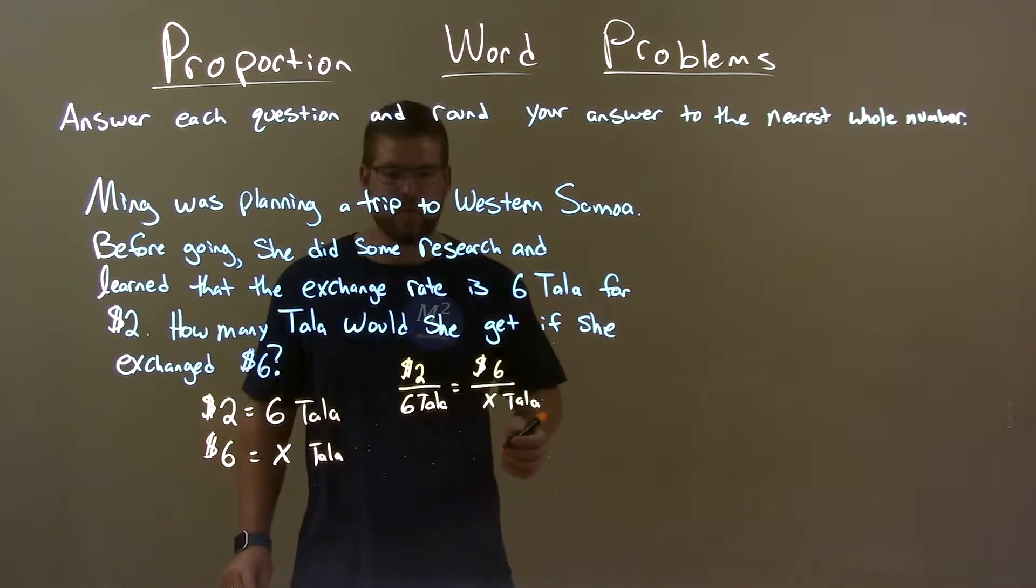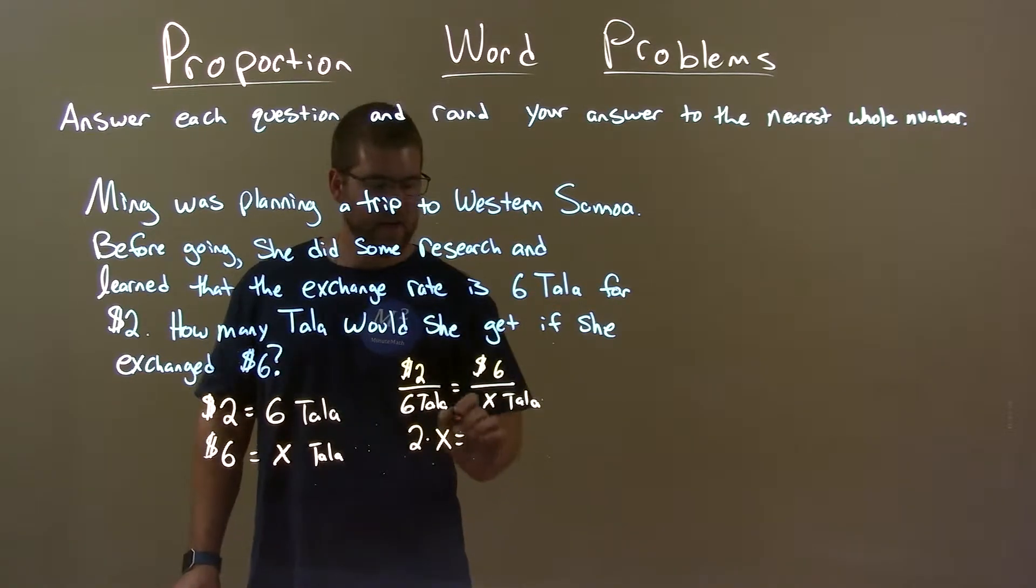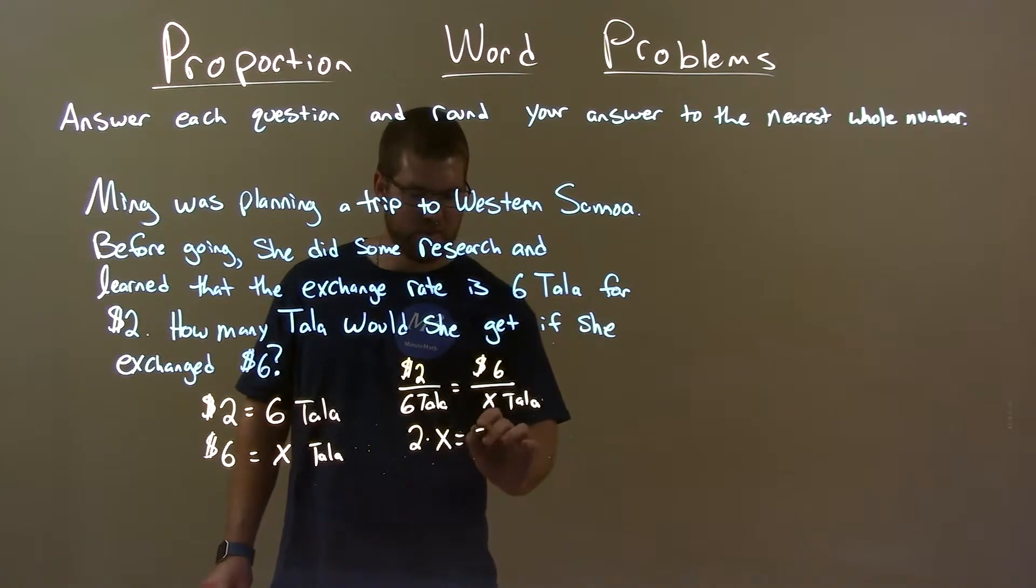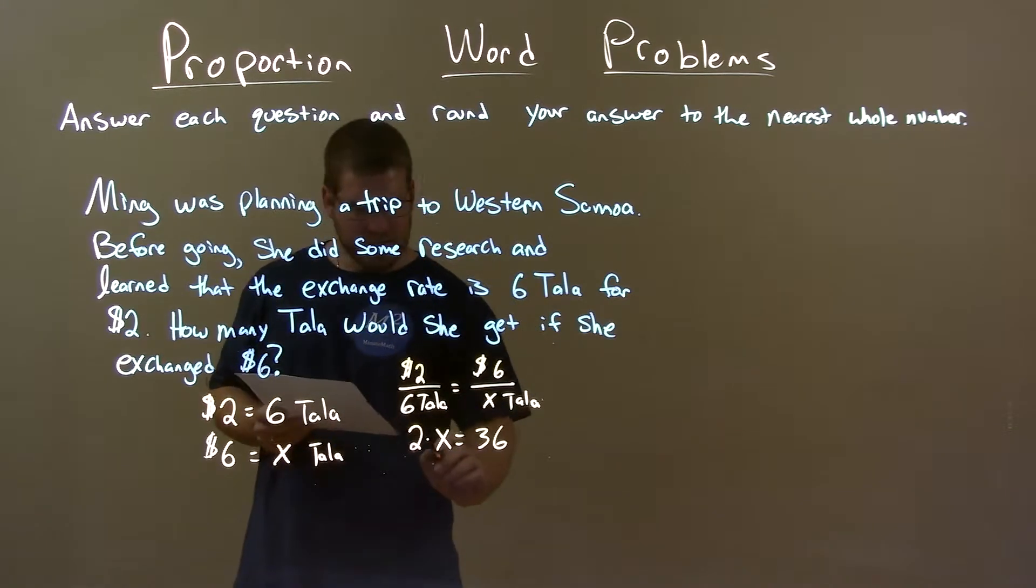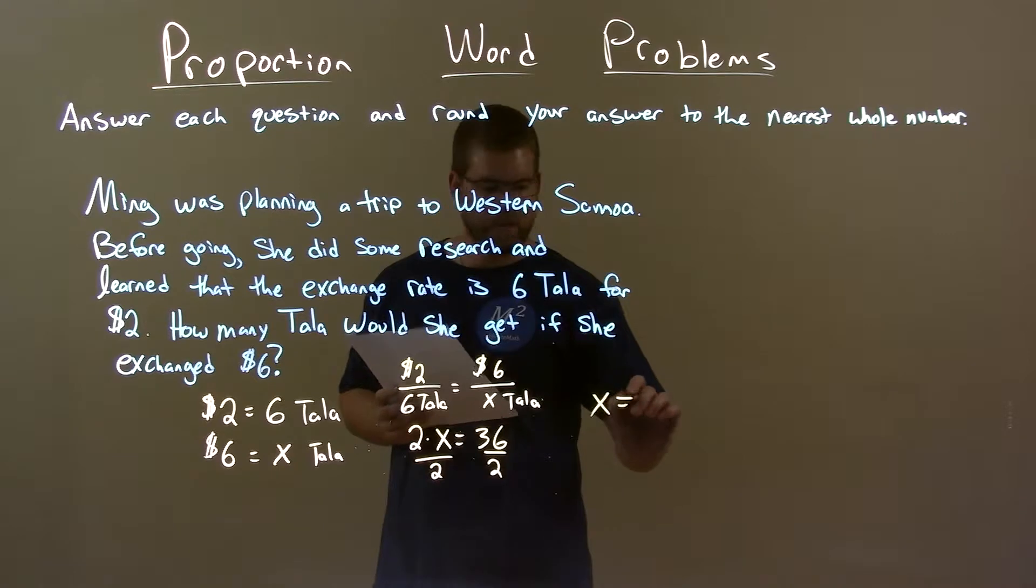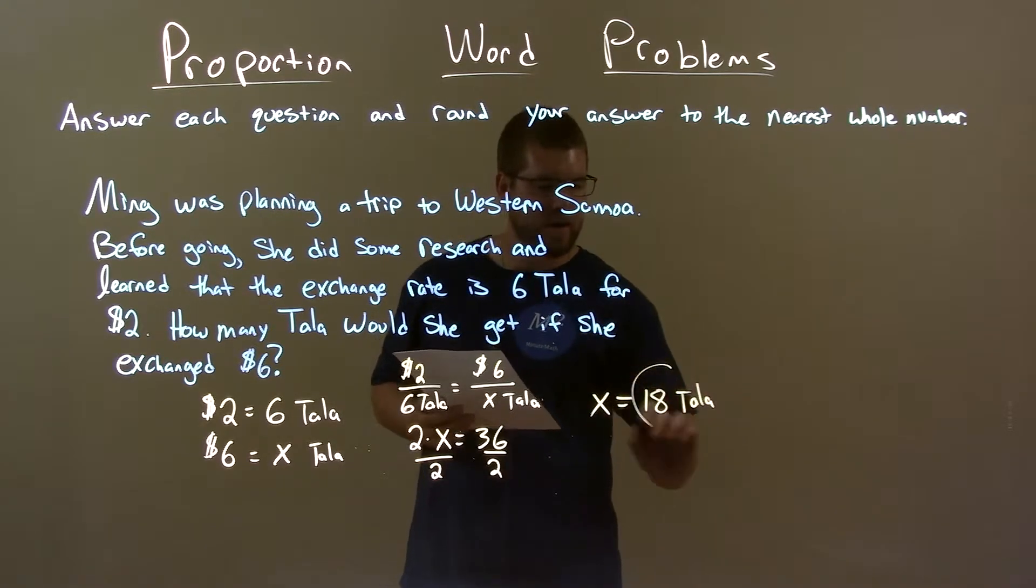And now let's solve for x. Cross multiply, two times x is 2x, equals six times six is 36. Okay, we have 36 here. Now we can solve for x, divide both sides by two. And we get x by itself, which I'll put over here, x equals 18 tala. And so there is our answer.